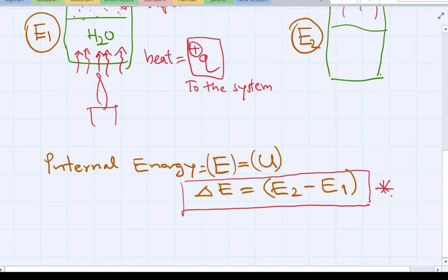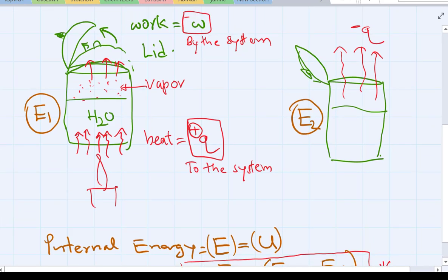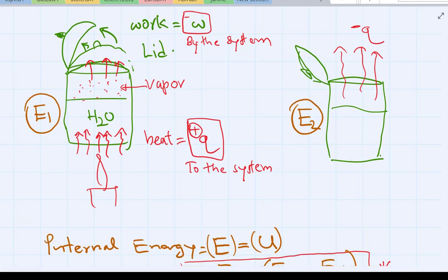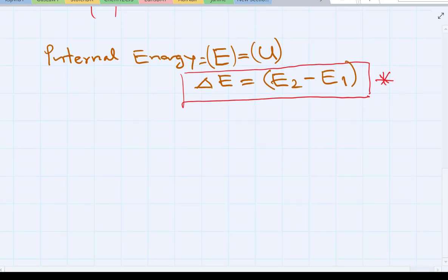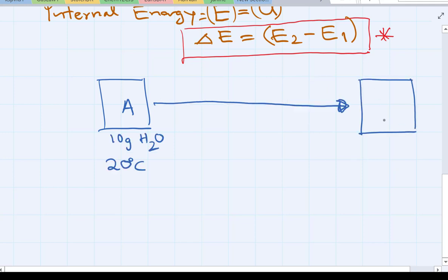Now, we can also look at two systems here, A to B. Let's say, again, about 10 grams of water, 20 degrees, and this one, let's say, 30 degrees.